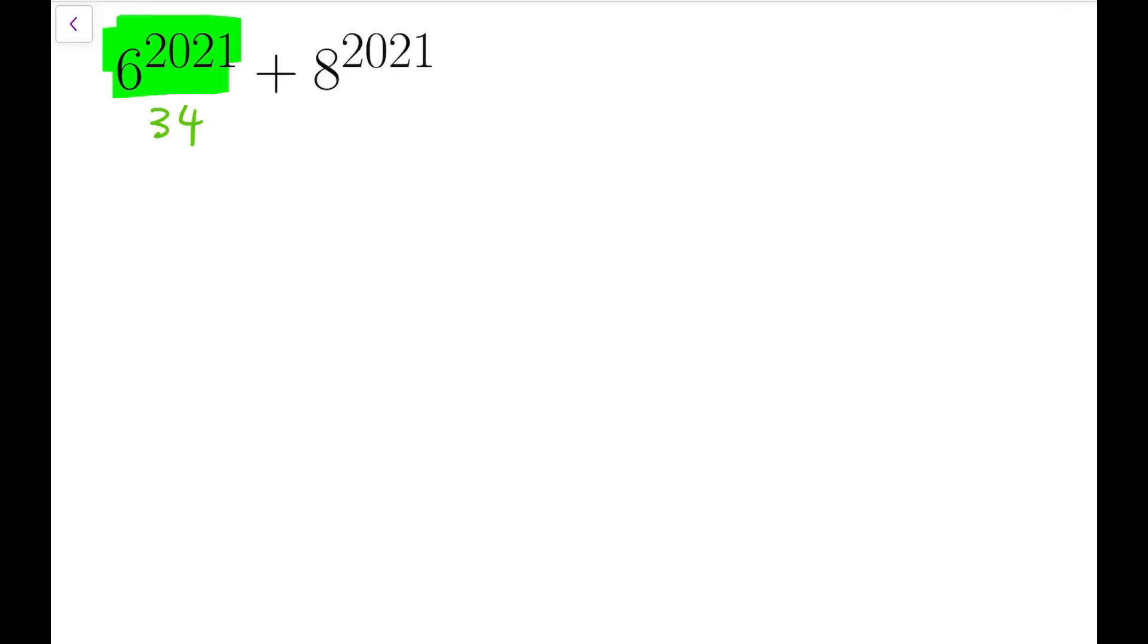Now for powers of 8, we can do the same: 8, then 64 becomes 15, 120 becomes 22, 176 becomes 29. Then we have 232 which is 36, 288 becomes 43, or -6.